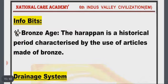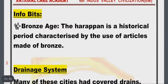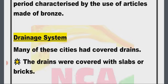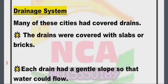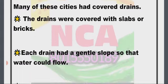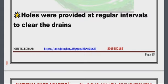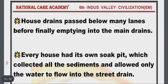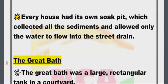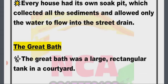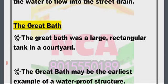Burnt bricks are used in construction because they are strong, durable, resistant to fire, and will not dissolve in water or rain. Bronze Age info: The Harappan is a historical period characterized by the use of articles made of bronze. Drainage system: Many of the cities had covered drains. The drains were covered with slabs or bricks, each drain had a gentle slope so that water could flow, and holes were provided at regular intervals to clear the drains. House drains passed below many lanes before finally emptying into the main drains. Every house had its own soak pit which collected all sediments and allowed only water to flow into the street drain.